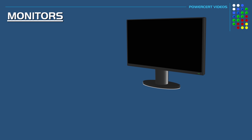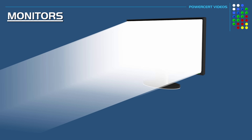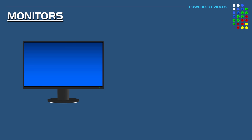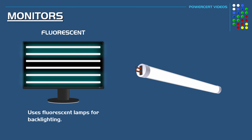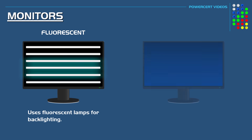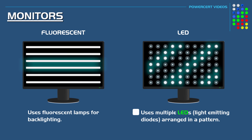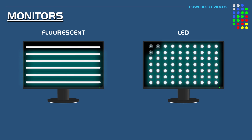In order for LCD monitors to show an image, they need a light source, and there are a couple of different types of backlighting. The older type uses fluorescent lamps — circular glass or straight tubing similar to regular fluorescent lamps. These lamps emit ultraviolet light created when mercury vapor inside the lamp is ionized. Another type of backlighting that LCD monitors use is LED, where multiple light-emitting diodes are arranged in a pattern to display images. This is a more modern form of backlighting compared to the older fluorescent lamp backlighting.